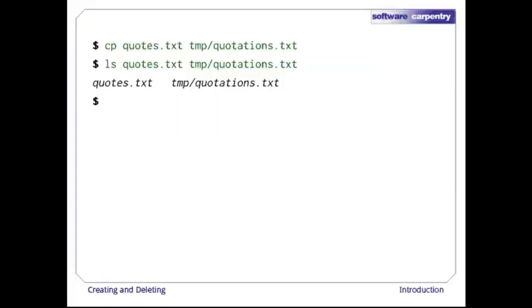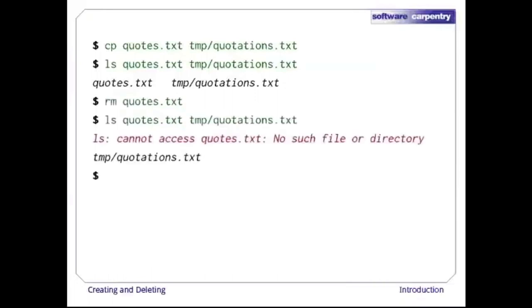To prove that we made a copy, let's delete the quotes.txt file in the current directory, and then run ls again. This time, ls tells us that it can't find quotes.txt in the current directory, but it does find the copy in temp, which we didn't delete.